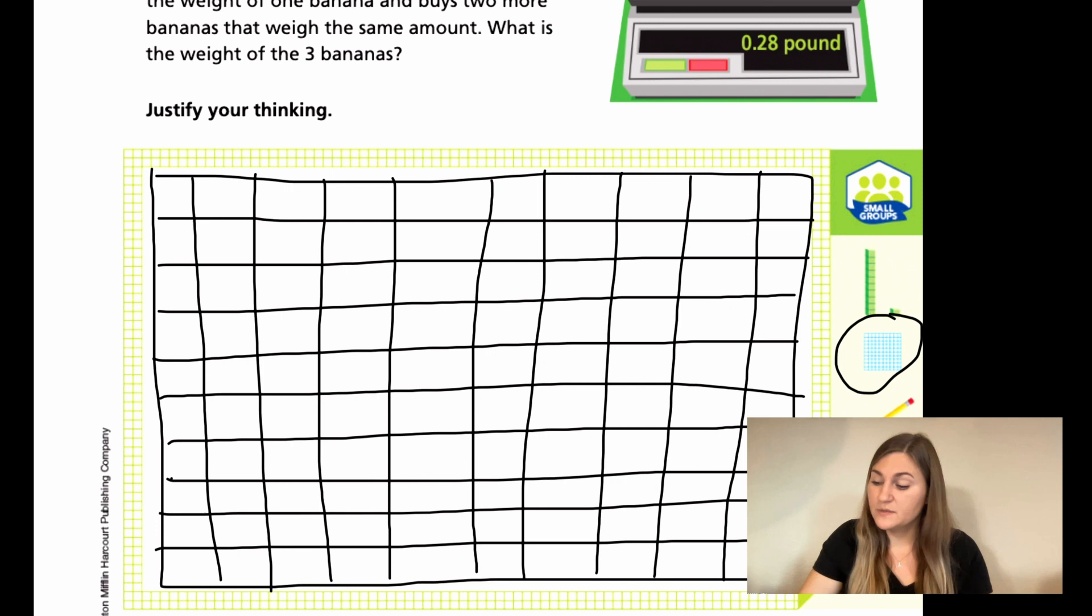So now we get to color in 28 squares three times. I'm going to use different colors so you can see what's going on. If I fill in the first row, that's 10. The second row is 20. Now counting to 28: 20, 21, 22, 23, 24, 25, 26, 27, 28.